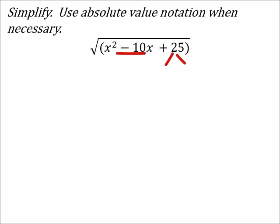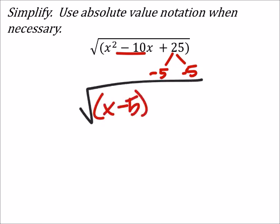So yeah, we need it to add up to negative 10 in this case, right? So that's going to be negative five, very good, and negative five. So we got the square root now of x minus five times x minus five.